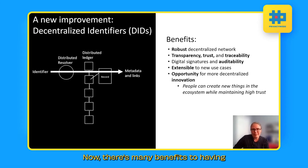Now, there's many benefits to having this kind of system of decentralization. We have a robust decentralized network. There's transparency, trust, traceability. And with that traceability and the associated digital signatures, we have auditability. And that means that it's a very extensible system. And there's lots of opportunity here for innovation. So people can create new things in the ecosystem while maintaining high trust.